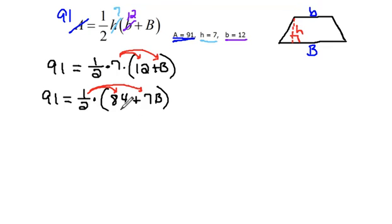We would have to be very careful about keeping parentheses around this because we're still multiplying by more than one term. So if I multiplied by the 1 half, I would have 91 equals 1 half of 84 would be 42. And 1 half of 7b would be 7 halves b.